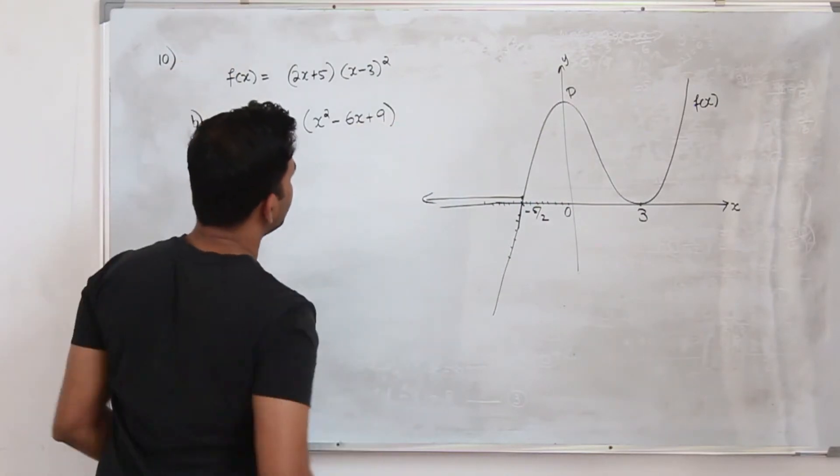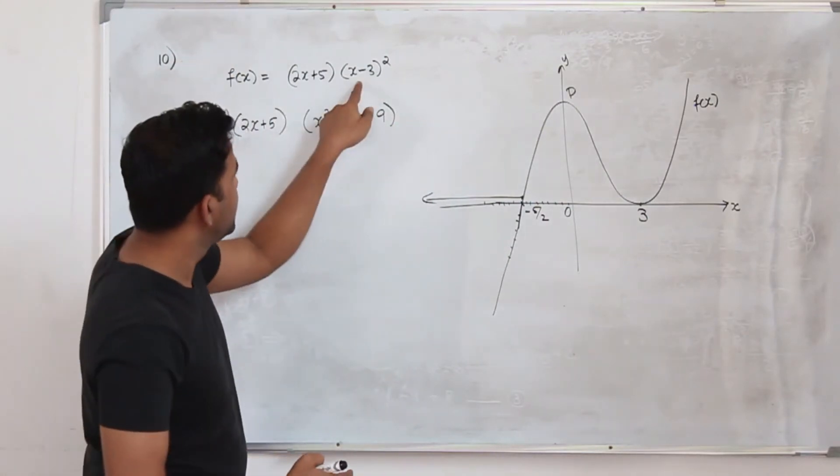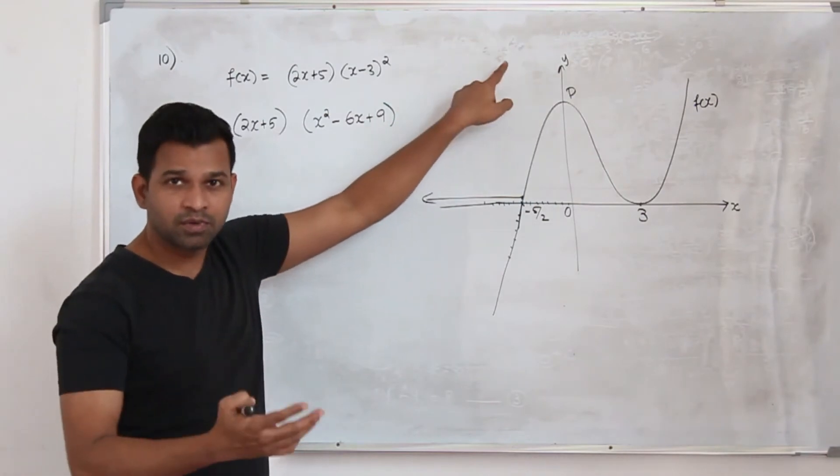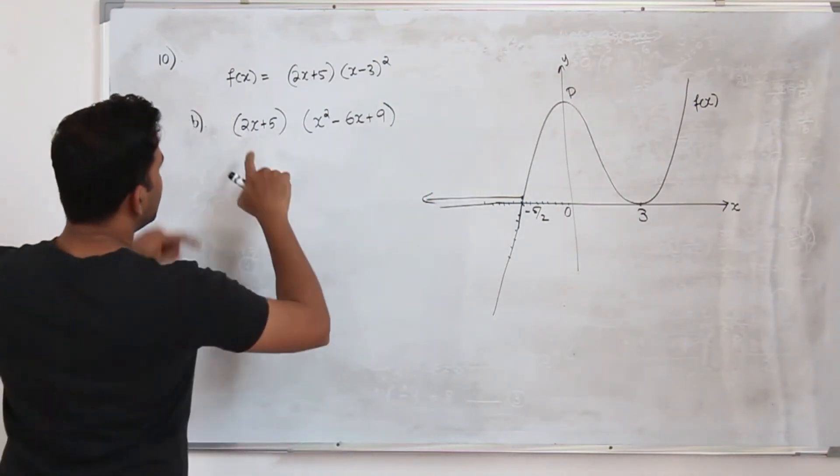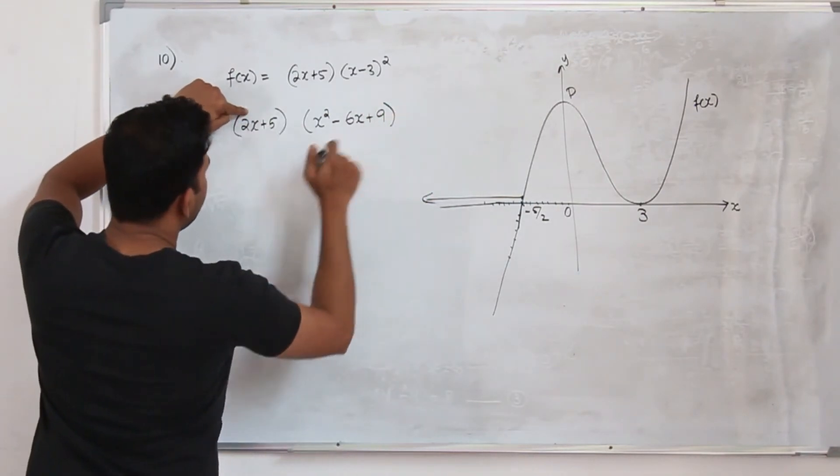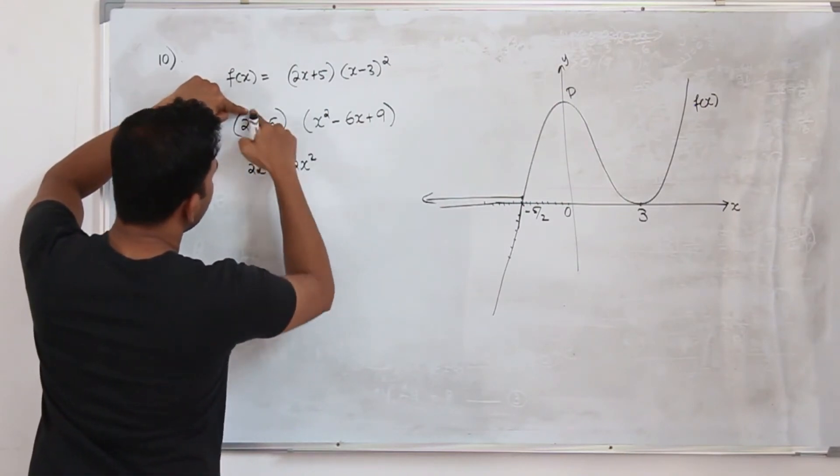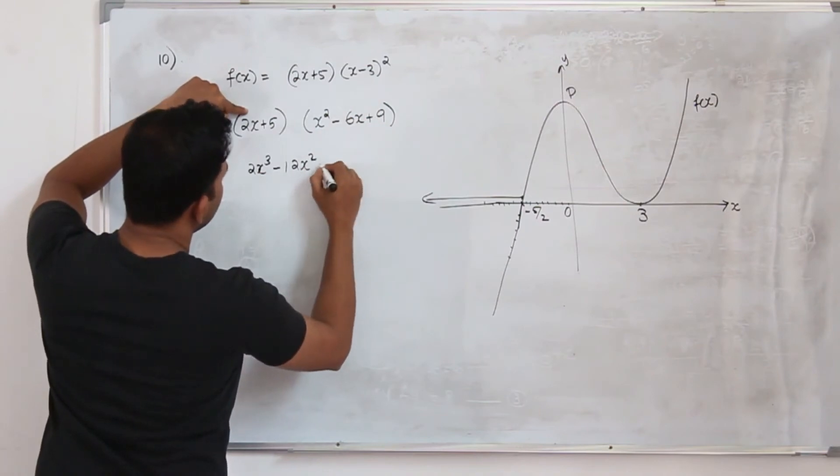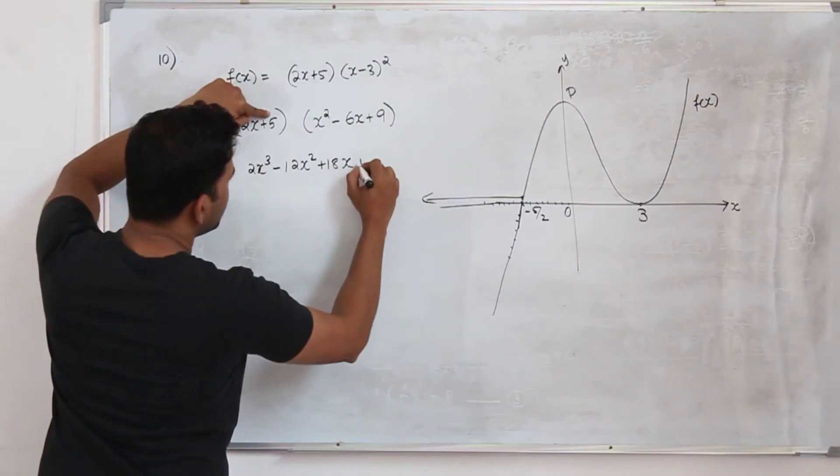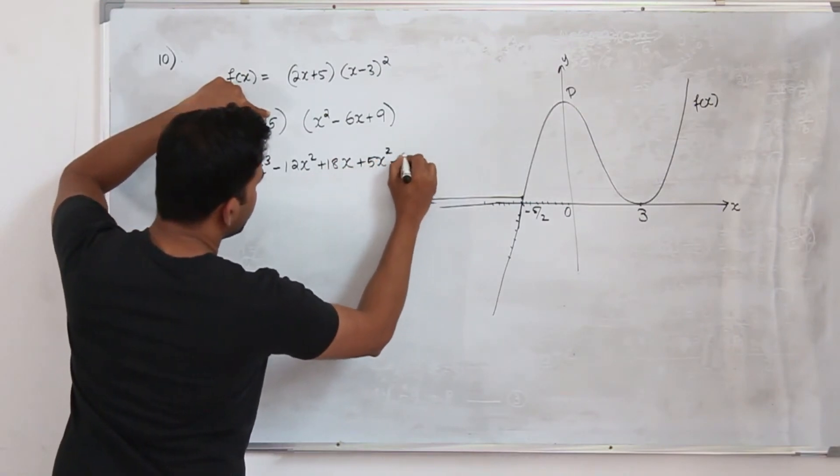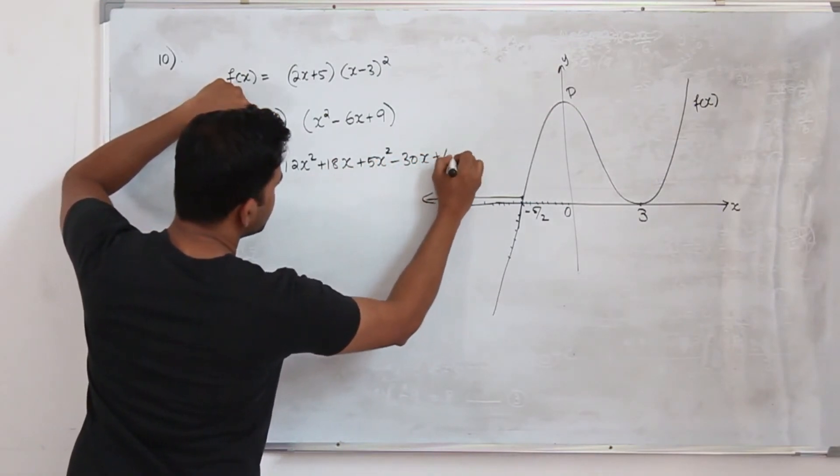3 square is 9. If you don't want to apply the identity, write it as x minus 3 into x minus 3 and multiply it. Now take 2x and multiply everything: 2x cube minus 12x square. 2x times 9 is 18x. Take 5 and multiply everything: 5x square minus 30x plus 45.